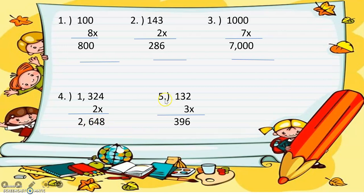Number 5: 122 times 3. So 3 times 2 equals 6, 3 times 2 equals 6, 3 times 1 equals 3 — so the answer is 396.